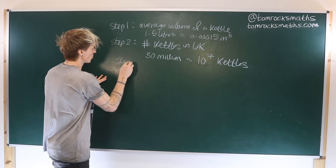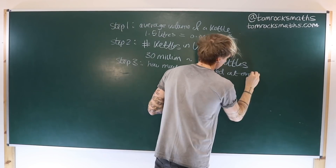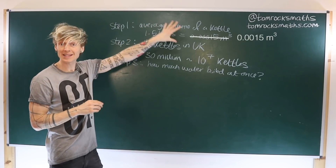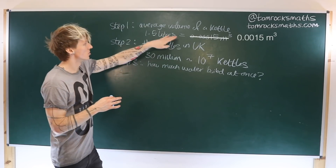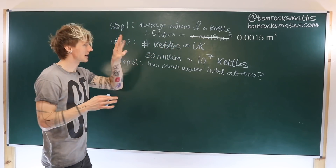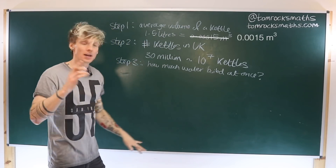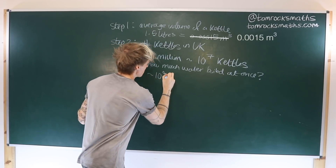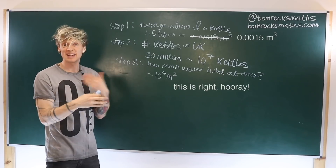For step three, we want to know how much water we can boil at once. This is simply the average volume of a kettle multiplied by the number of kettles. So we do 0.00015 multiplied by 10 to the 7. Working in powers of 10, 0.00015 is 10 to the minus 3, so we get approximately 10 to the 4 metres cubed of water that can be boiled in a single go.